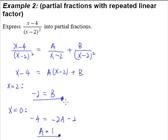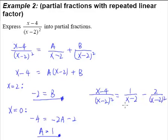So after we have found our A and B, then we say that this fraction of (x-4) over (x-2) square can be rewritten as 1 over (x-2) minus 2 over (x-2) square. So this is the so called partial fractions for this fraction.